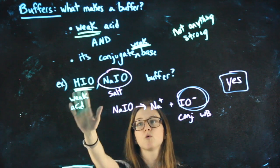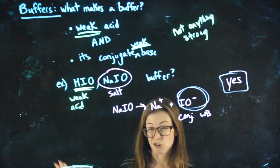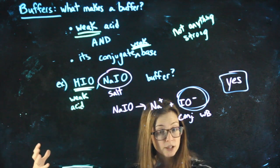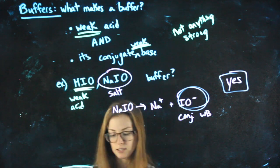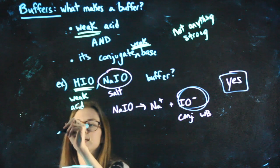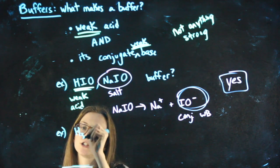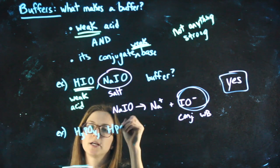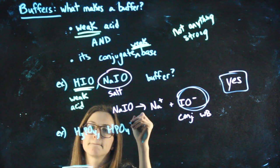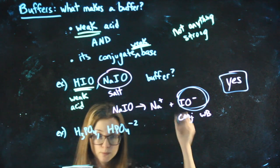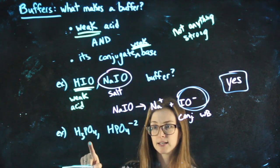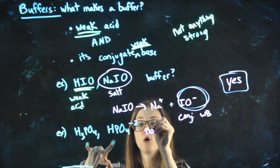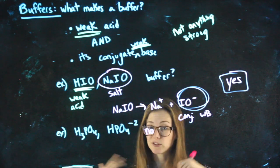HIO and NaIO could make a buffer. I might just give you a weak acid in its conjugate base. I might give you something strong, in which case it's not a buffer, if you're different by more than one H. For instance, another example. If I said H3PO4 and HPO4 minus 2, that's a weak acid. That's a weak base, but they're different by two hydrogens. So, no, they are not conjugates, so this is not a buffer.